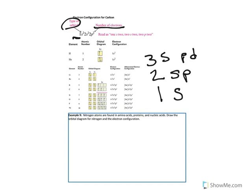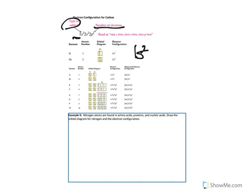So the electron configuration for carbon, which we just did the orbital diagram for — we said the 1s was full, so there were two electrons in the 1s; the 2s was full, so there are two electrons there; and in the 2p there were only two electrons. We read this notation from left to right as 1s², 2s², 2p².